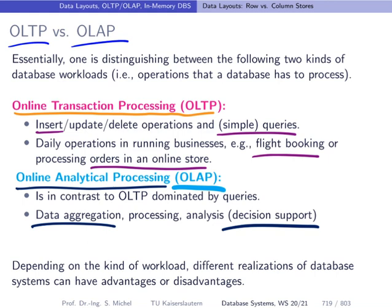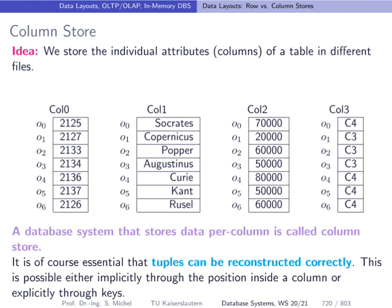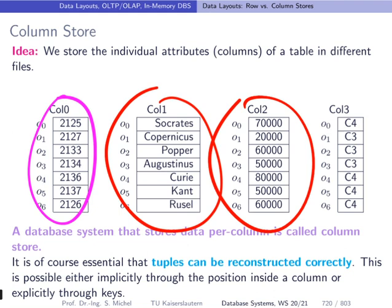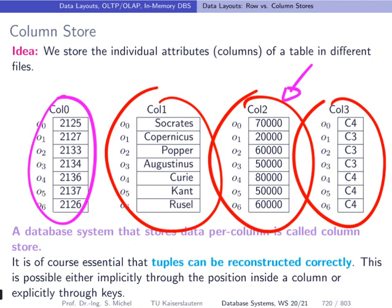In contrast to the row store, the idea in the column store is to store individual attributes — the columns of a table — inside different files. In the case of our professor information table, we have four files: one storing the employee ID, one storing the names, one for salary, and one for position. If we have a query asking for the average salary of all professors, we only have to read the salary file, which is of course very efficient because this one file is much shorter than reading the entire table as in a row store.